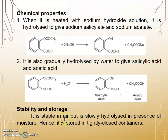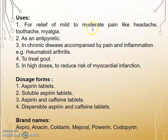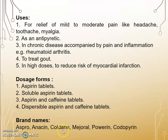Stability and storage: Aspirin is stable in air but slowly hydrolyzes in the presence of moisture, hence it is stored in a tightly closed container. Uses: for relief of mild to moderate pain such as headache, toothache, and myalgia; as an antipyretic; in chronic disease accompanied by pain and inflammation such as rheumatoid arthritis; to treat gout; and in high dosage to reduce risk of myocardial infarction. Dosage forms: aspirin tablet, soluble aspirin tablet, aspirin and caffeine tablet, dispersible aspirin and caffeine tablet. Brand names: Aspro, Anadin, Colderine, Mejorol, Powerine, and Codopyrene.